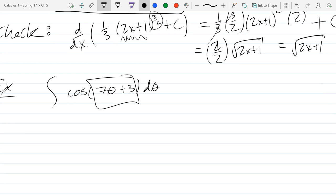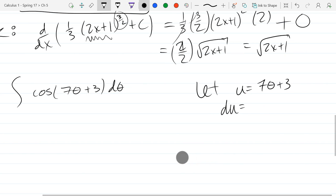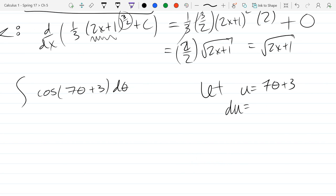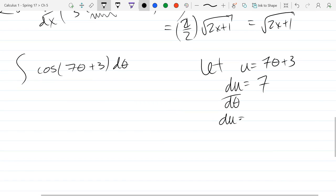So what we're going to do is same thing we did last time. I'm going to let u equal 7 theta plus 3. What is the derivative? This is the theta derivative of 7 theta plus 3. Don't be afraid - it's 7, just like the derivative of 7x if we have thetas.